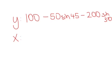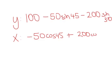In the x direction, the 100 doesn't act there, so all we have is negative 50 cos 45 plus 200 cos 30.